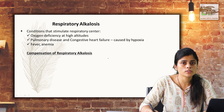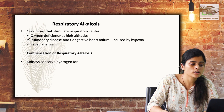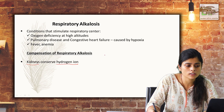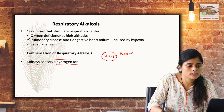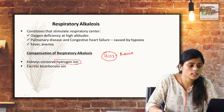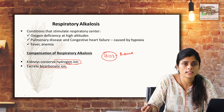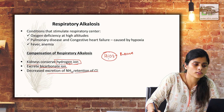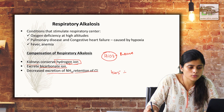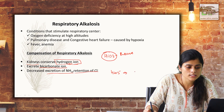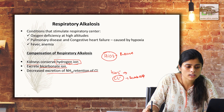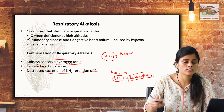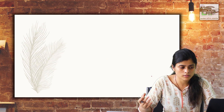Compensation of respiratory alkalosis is mainly by conservation of hydrogen ions. Since the body has excess bicarbonate and decreased H+, the kidney conserves hydrogen ions and excretes excess bicarbonate. There is decreased excretion of ammonia and retention of chloride ion — since chloride and bicarbonate are both anions, when bicarbonate is excreted, chloride is reabsorbed to maintain electrical neutrality. So in respiratory alkalosis the body gets rid of base and retains acid.